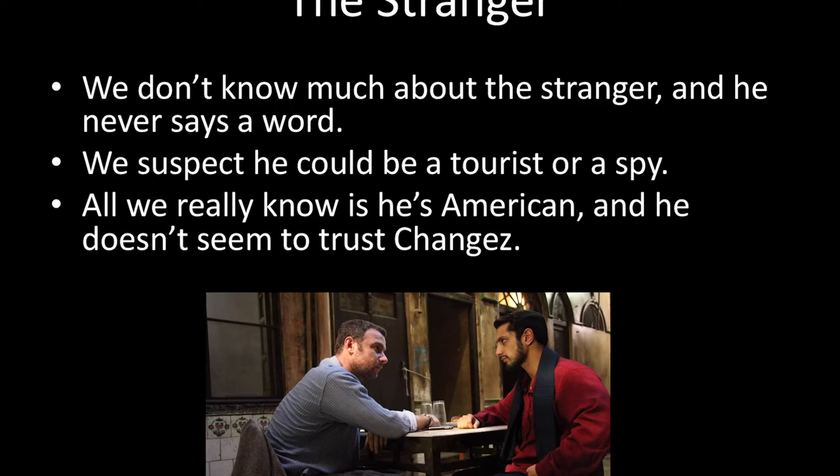The stranger essentially sets off the entire story as Changez recounts his life to him, but he remains very much a mystery. We don't really know him and he never says much during the novel. We suspect he could be a tourist or a spy, and many analysts lean towards him being a CIA spy. All we really know is that he is American and doesn't seem to trust Changez.